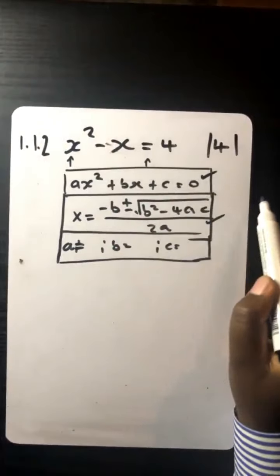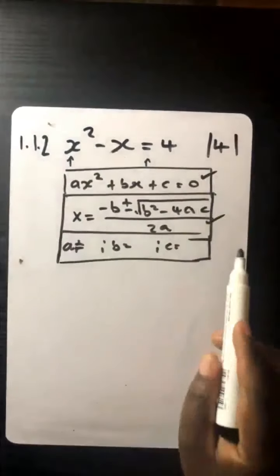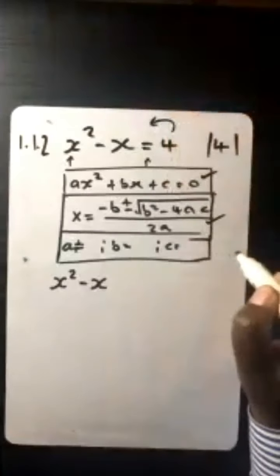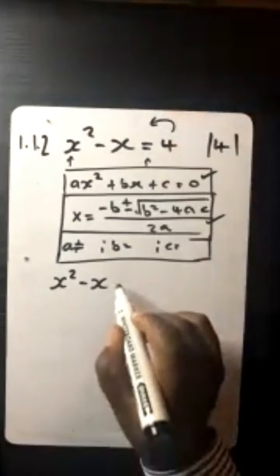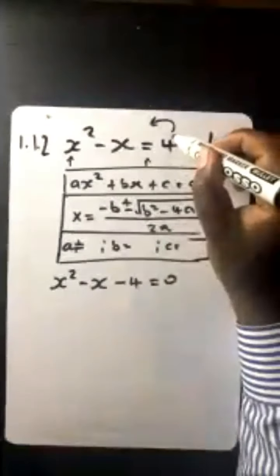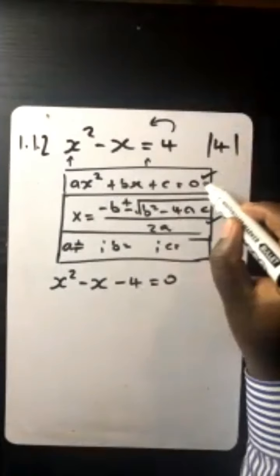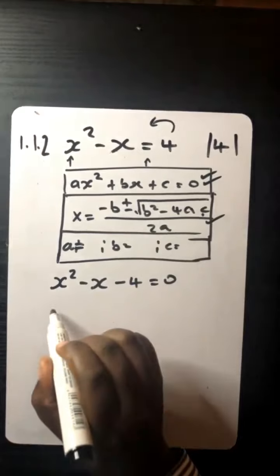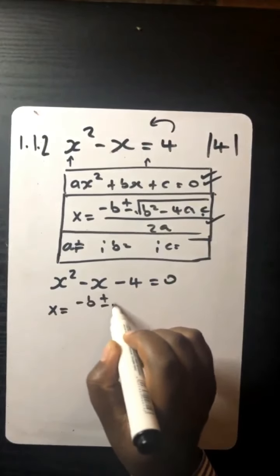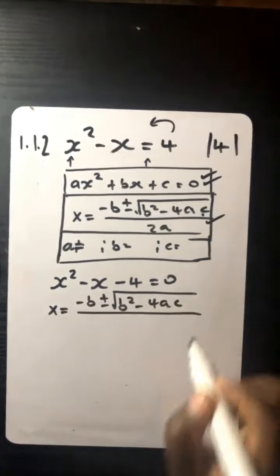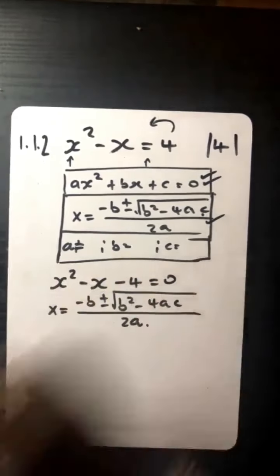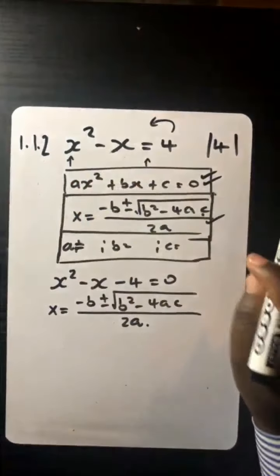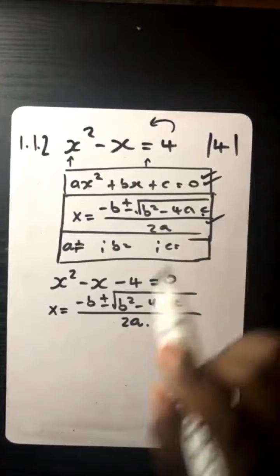To write it in standard form, move everything to the left and equate to zero. You move the positive 4 to the left — it changes sign to negative 4 — giving you x squared minus x minus 4 equals zero. Once it's in standard form you can apply the formula: negative b plus or minus square root of b squared minus 4ac, over 2a.